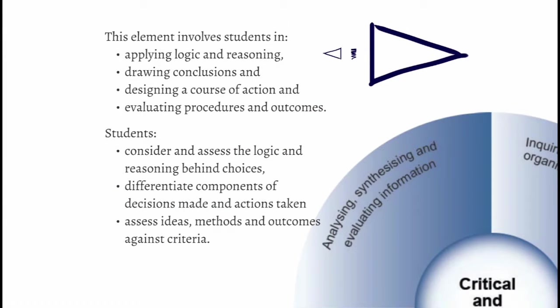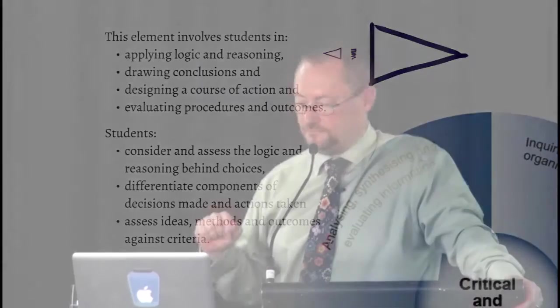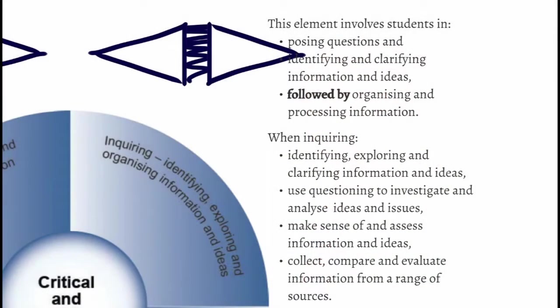Start with your stuff and apply logic, draw conclusions — it's this kind of narrowing. There's not so much of the switch and not so much of the generative thinking. If we flip over to another quadrant, this is the inquiring one. When students are inquiring, they're posing questions, identifying and clarifying information, then organising and processing information. If you were to draw a diagram and put the triangles on it — the divergent thinking, the convergent thinking and the switch — what would the balance be? Which would be bigger and which would be smaller?